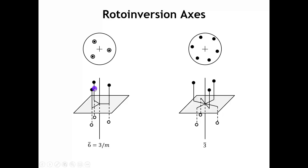Interestingly, the six-bar rotoinversion axis, shown here, is the same thing as a three-fold rotation axis coupled with a perpendicular mirror plane. Rotating by 60 and inverting creates successive points, and with successive operations of the six-bar axis we get the full picture. When we look at point groups, these equivalencies — such as a six-bar rotation axis equaling a three-fold axis with a perpendicular mirror plane — will be important.